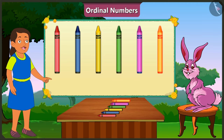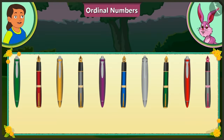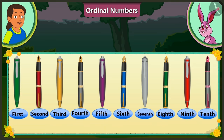And at the end is the orange crayon. Absolutely right, Bubbly! Ordinal numbers depict the right position or order of anything. Bunny, it was very nice to talk to you. Now I shall leave. Okay, I too shall leave.